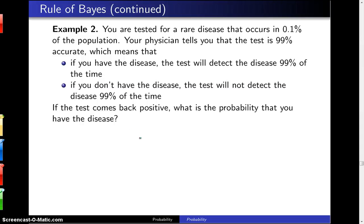You are tested for a rare disease that occurs in 0.1% of the population. Your physician tells you that the test is 99% accurate, by which the physician means that if you have the disease, the test will correctly detect the disease 99% of the time. And if you don't have the disease, the test will not detect the disease 99% of the time. If the test comes back positive, what is the probability you have the disease?